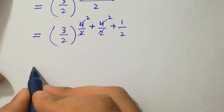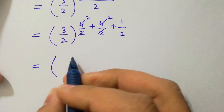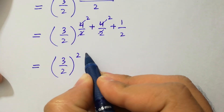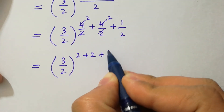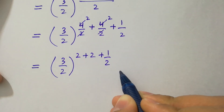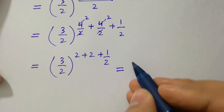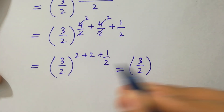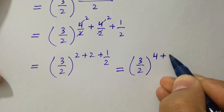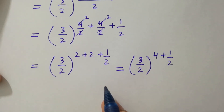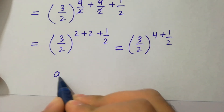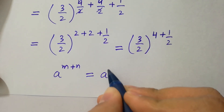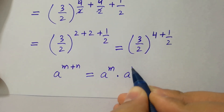We have 3 over 2 to the whole power 2 plus 2 plus 1 over 2, which is equal to 3 over 2 to the whole power 2 plus 2 plus 1 over 2, giving us 4 plus 1 over 2. As we know, a to the power m plus n equals a to the power m times a to the power n.